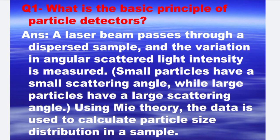Question number one is: what is the basic principle of particle detectors? The answer is, a laser beam passes through a dispersed sample and the variation in angular scattered light intensity is measured. Small particles have a small scattering angle, while large particles have a large scattering angle. Using Mie theory, the data is used to calculate particle size distribution in a sample.